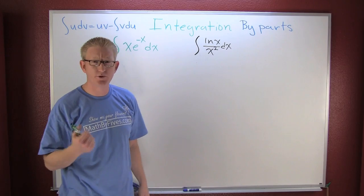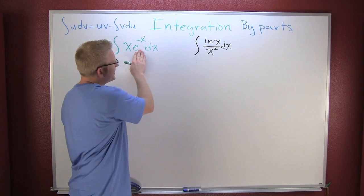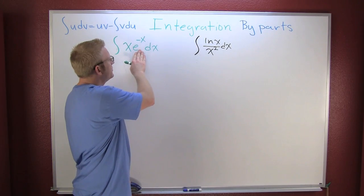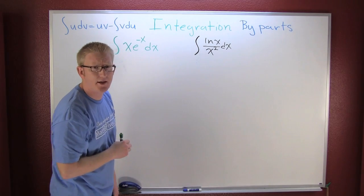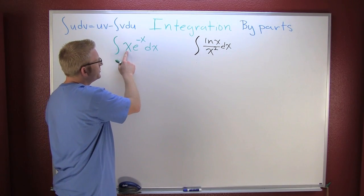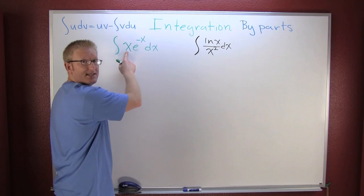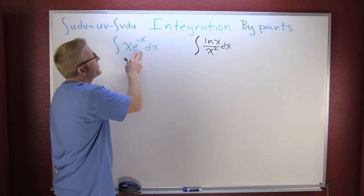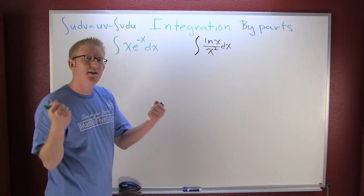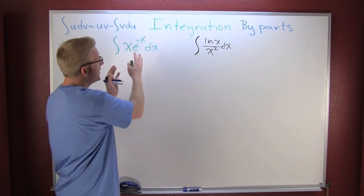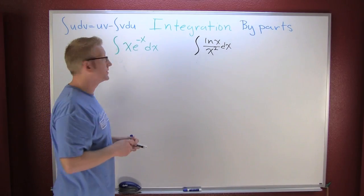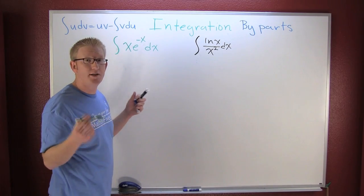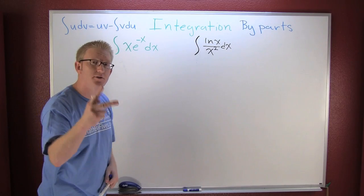Here, if we tried to let that be u, then du would be e to the x, and that piece isn't there. Here, if we let that thing be u, then du would be dx, but then what do you do with e to the x? The derivative is not embedded in the integral.